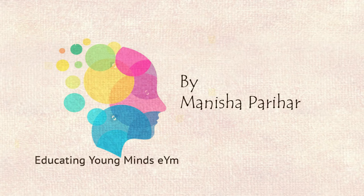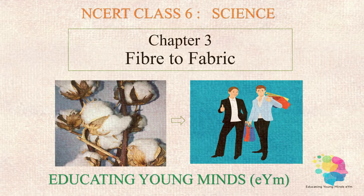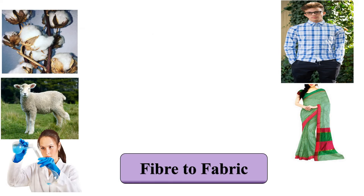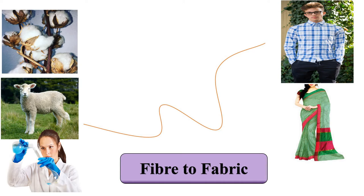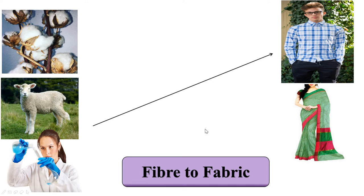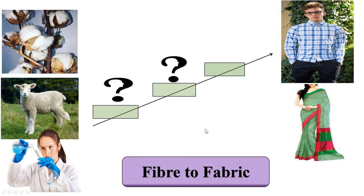Hello learners, I hope you are doing great. Once again, I welcome you all to my channel Educating Young Minds, where today we will be covering the third chapter of our class science NCERT textbook — that is Fiber to Fabric. This chapter is all about how fibers obtained from plants, animals, or chemicals get ultimately converted into the clothes we wear. Watch this video till the end to understand the complete process step by step.